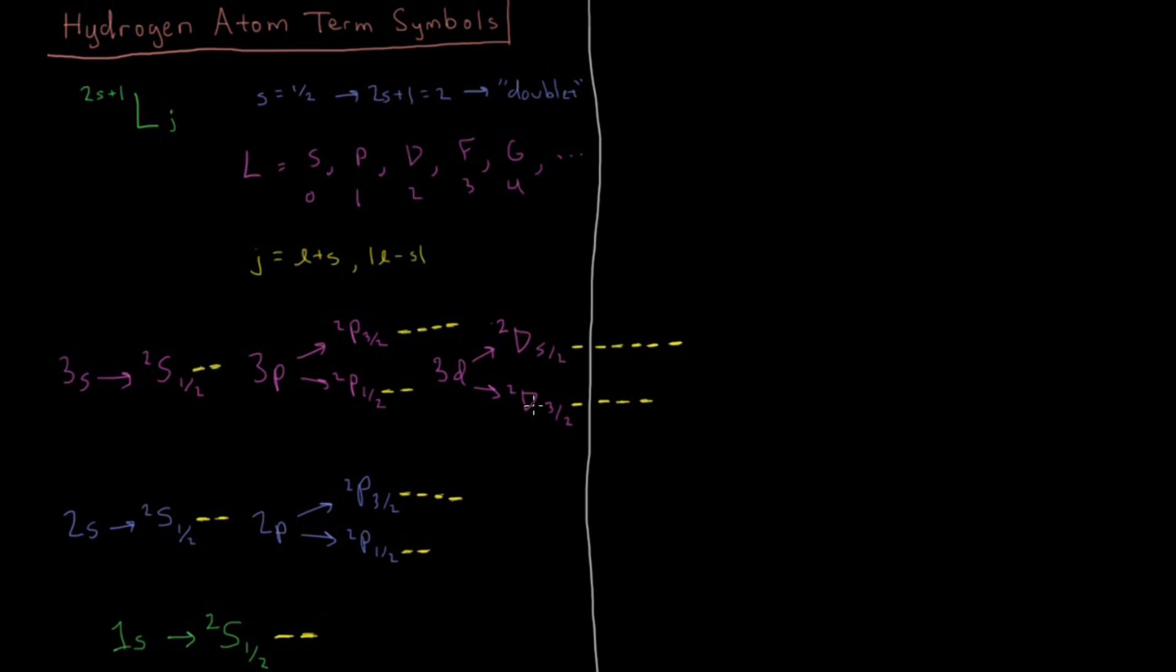So we're going to look at how this affects the transitions which are possible and which occur in the hydrogen atom spectrum. The line spectra that we looked at a very long time ago that eventually determined the Rydberg formula for those transitions.